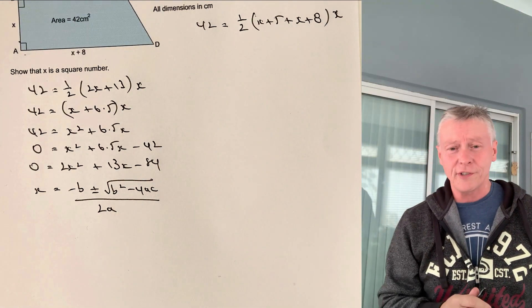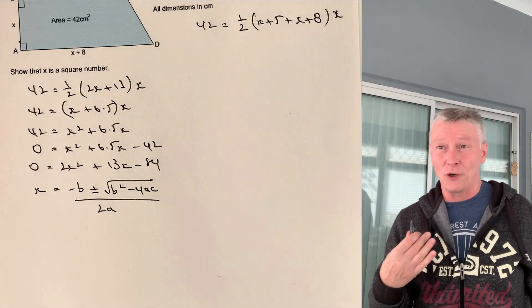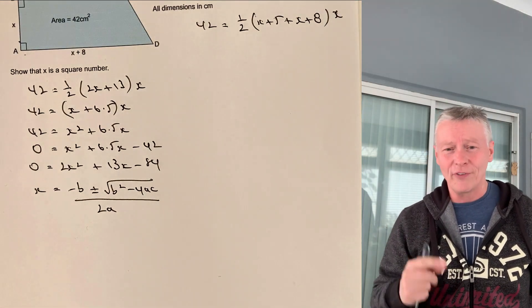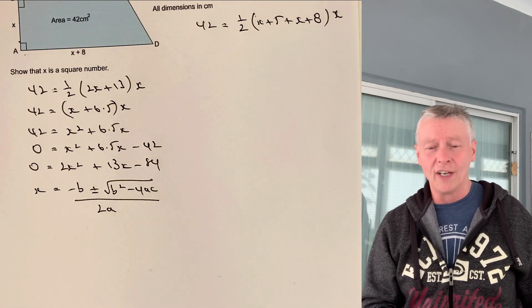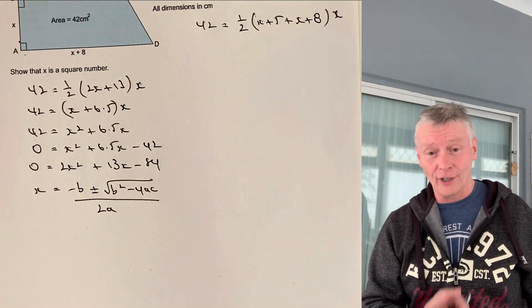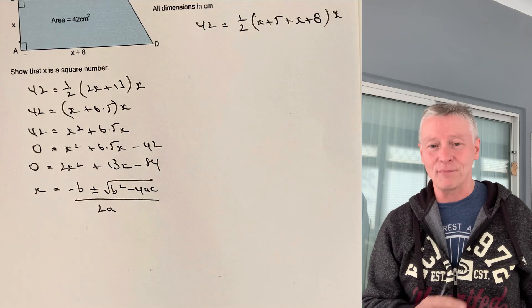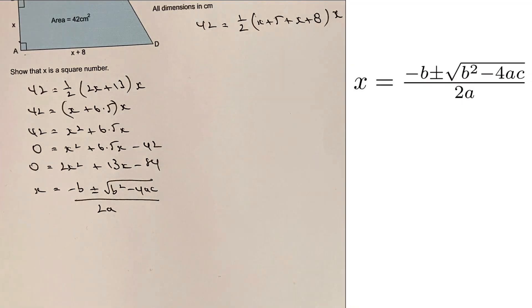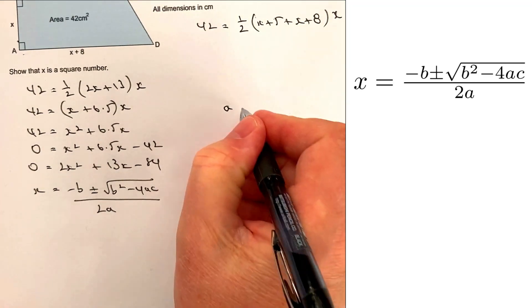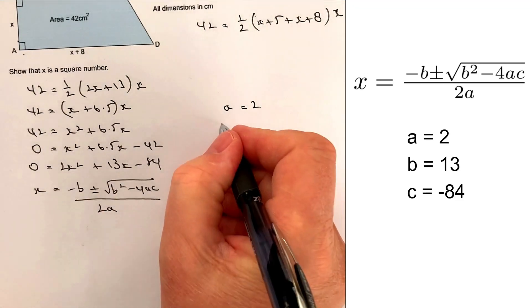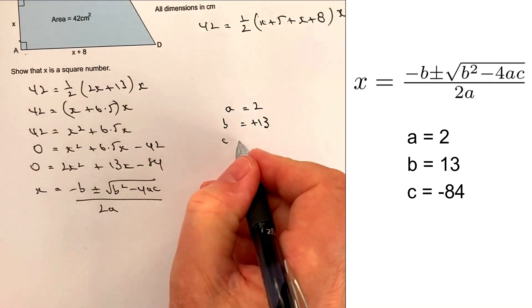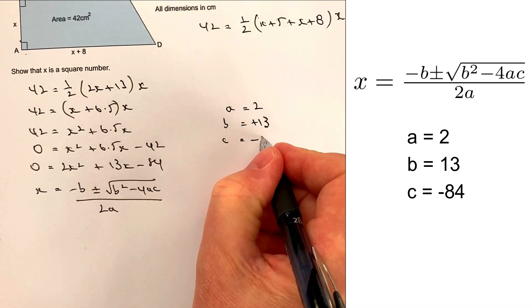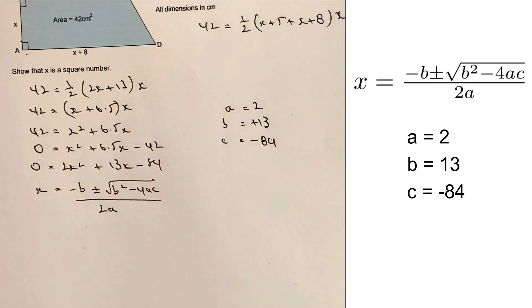Now, I do suggest that you learn the quadratic formula. It is in or used to be in some of the early exam papers, but I think they've stopped that now. So it's well worthwhile learning it. And also follow the link. And there are some more examples of quadratic formula. Okay, so that means that I can say that a equals 2, which is this first number here, b equals positive 13, and c equals minus 84.